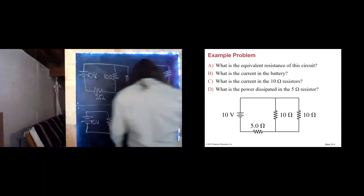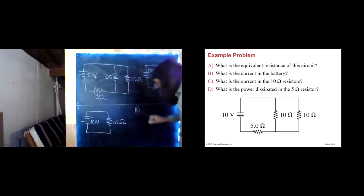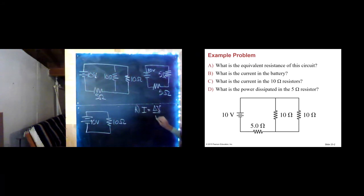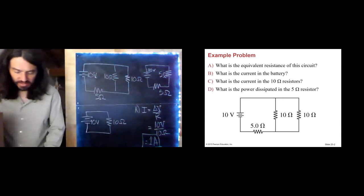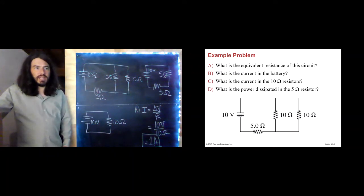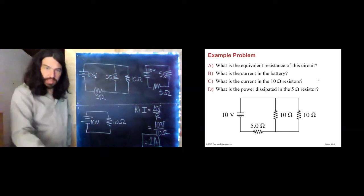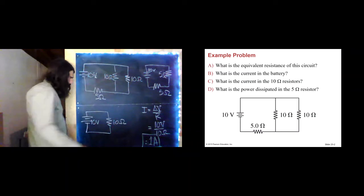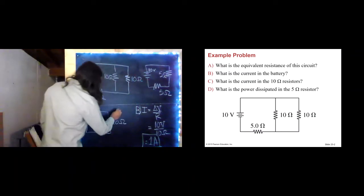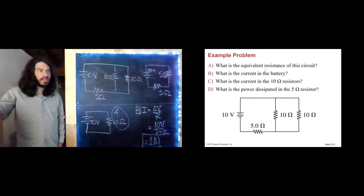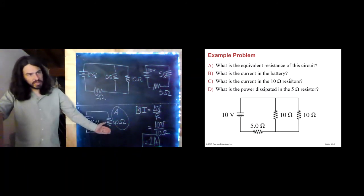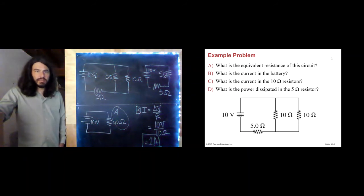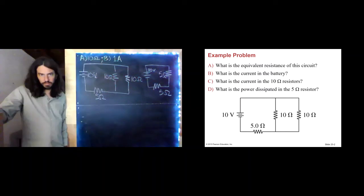Now we can solve for the battery current. Part A. Our battery current is I equals delta V over R equals 10 volts over 10 ohms equals 1 amp. Our battery current is 1 amp. Now, what is the current in the 10 ohm resistor? I'm going to go ahead and tidy up my board. I will be right back.